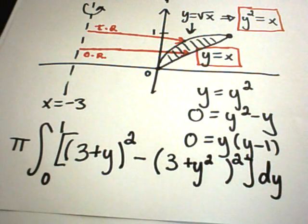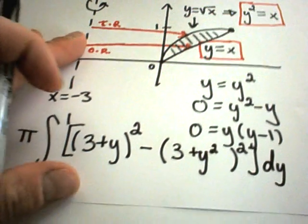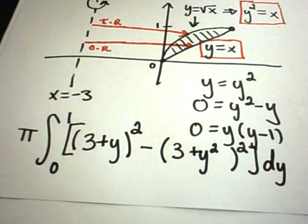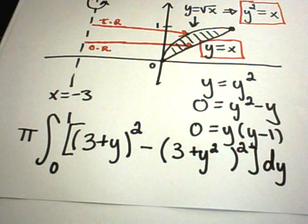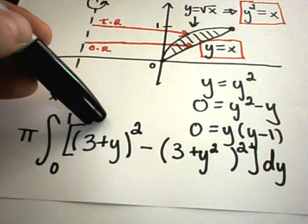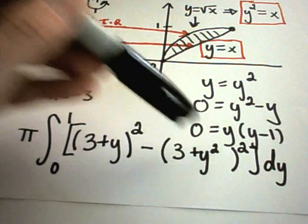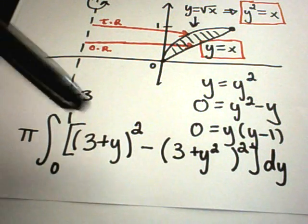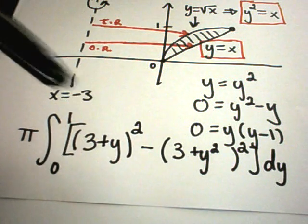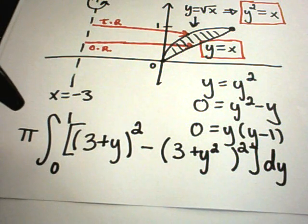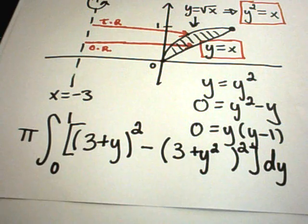And this is now the integral that you would have to calculate. So to calculate this integral, really the easiest thing to do would be to simply foil out the first piece, foil out the second piece, be careful to distribute your negative to everything after that, collect your like terms, and then it should be a relatively straightforward integration problem.